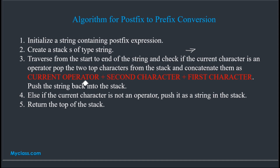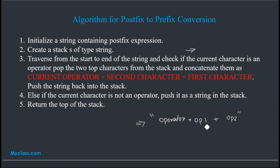Check if the current character is an operator. If it is, we pop the two topmost elements from the stack and concatenate them as: current operator + second popped operand + first popped operand. We then push that resulting string back into the stack. If the current character is an operand, we push it as a string into the stack.